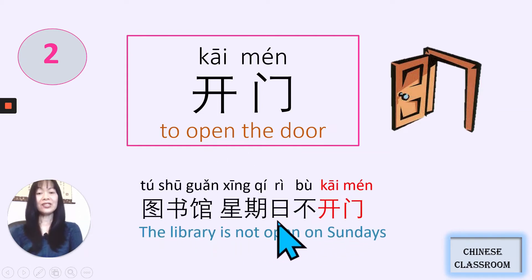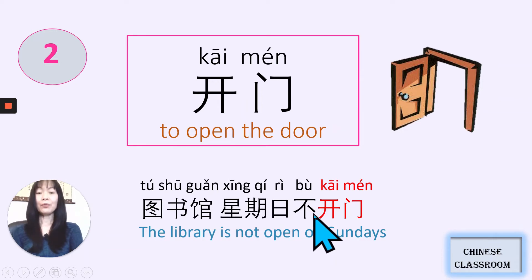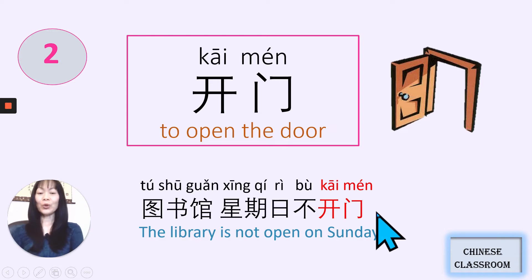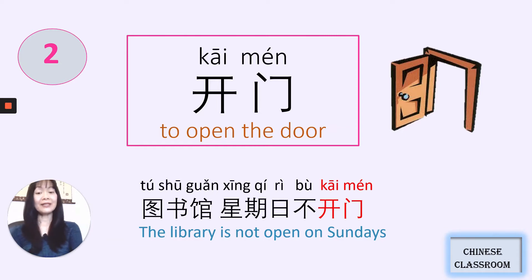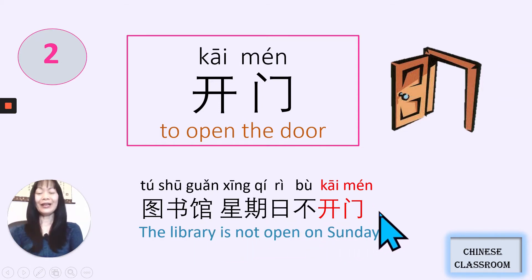图书馆, 星期日, 不开门. 图书馆 — the library. 星期日 — Sunday. 不开门: 不 means 'not,' 开门 means 'open the door.' So that means the library is not open the door — it's not open for business. 开门 can also mean 'open for business.' So, 图书馆, 星期日, 不开门 — the library is not open on Sundays.